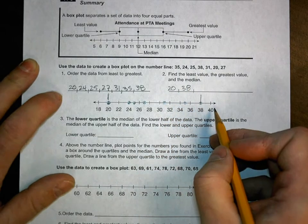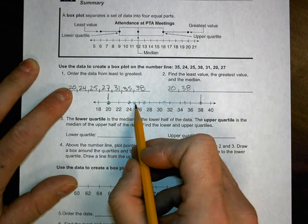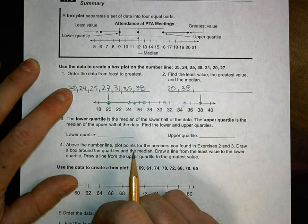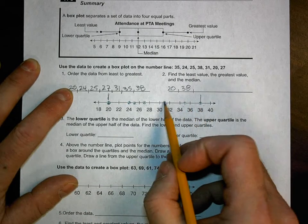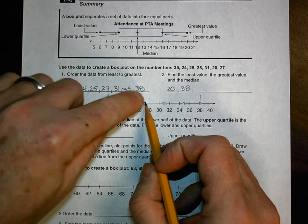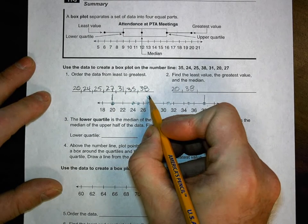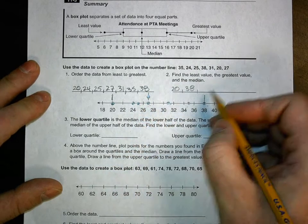Now to find the median, I'm going to count the number of dots. One, two, three, four, five, six, seven. I like it when they're an odd number because it means it works great. So one, two, three, four, and one, two, three, four. So it is this dot here becomes the median. I'm going to go ahead and put it up here for the box plot, and that's 27.